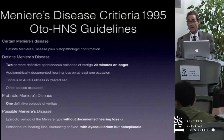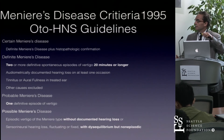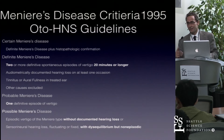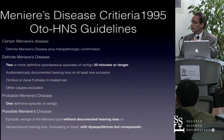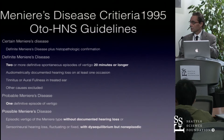The academy guidelines for diagnosis: certain Meniere's disease is definite Meniere's with histopathologic confirmation. Definite Meniere's disease is two or more definitive spontaneous episodes of vertigo lasting 20 minutes or longer, with audiometric data documenting hearing loss on at least one occasion in the affected ear, along with tinnitus and aural fullness. Probable Meniere's disease is one definitive episode of vertigo with audiometric-documented hearing loss, tinnitus, and aural fullness. Other causes should be ruled out.